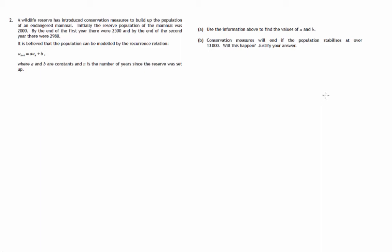This is the solution to Question 2, Paper 2 of the SQA's Curriculum for Excellence Specimen Higher Exam. We're wondering about a wildlife reserve where the population of mammals starts off at 2,000. We introduce conservation measures and the population increases after a year to 2,500, then after another year it's up at 2,980. We're told that we can model this situation by using this recurrence relation.